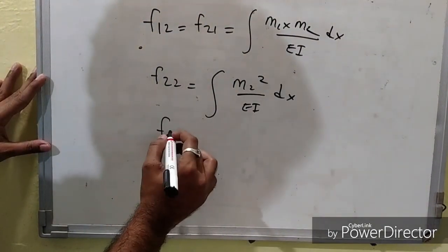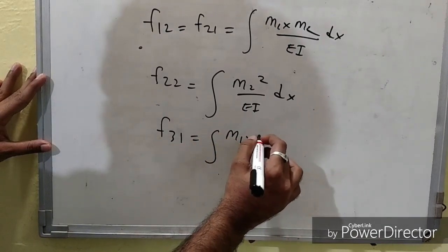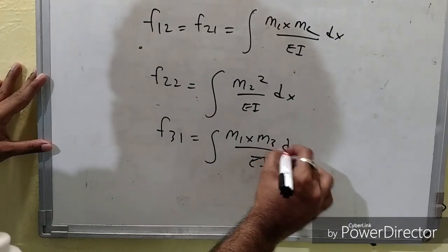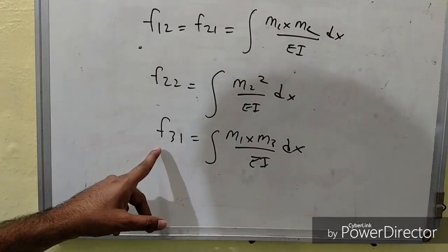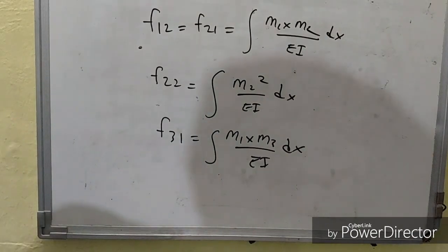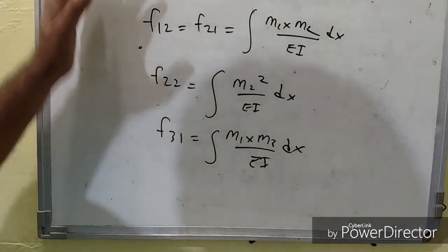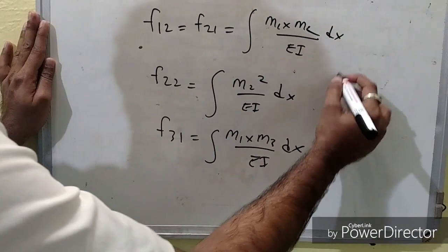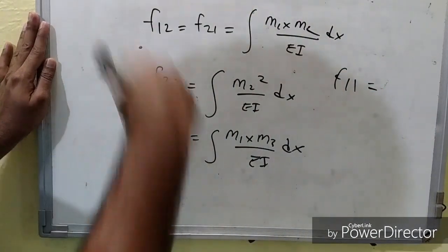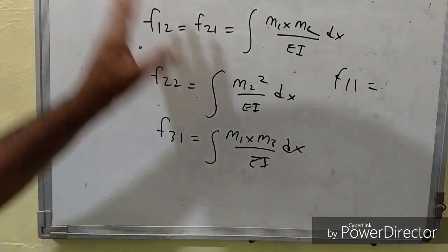If you have three coordinates, you can generalize these formulas. F31, which equals F13, is ∫ M1 · M3 / EI dx. F23, which equals F32, is ∫ M2 · M3 / EI dx. In this way, we can develop flexibility coefficient formulas for any number of coordinates.